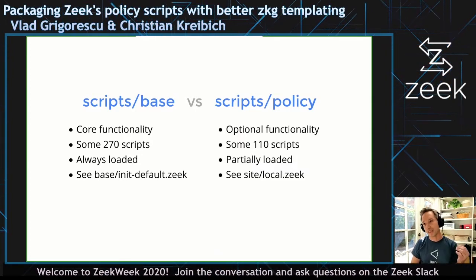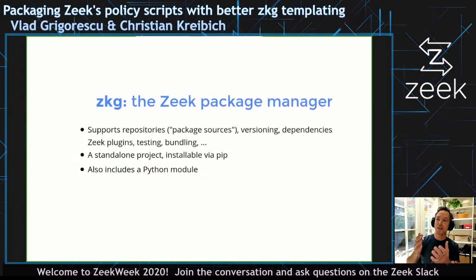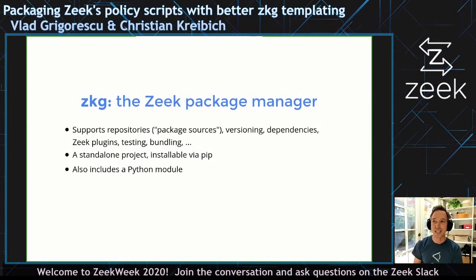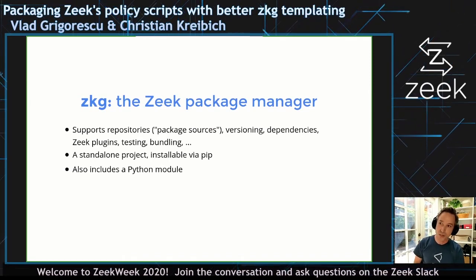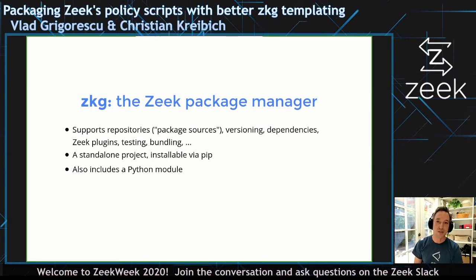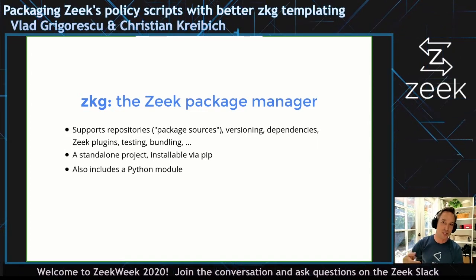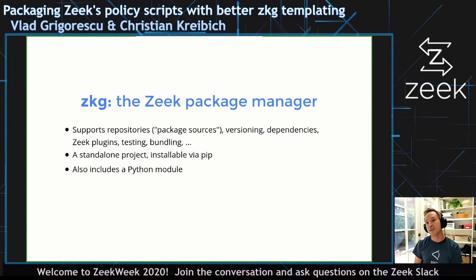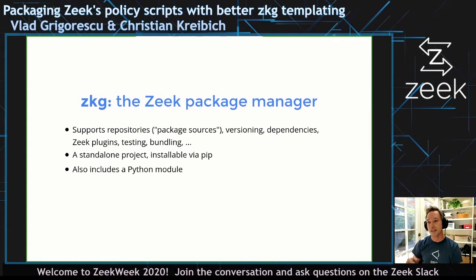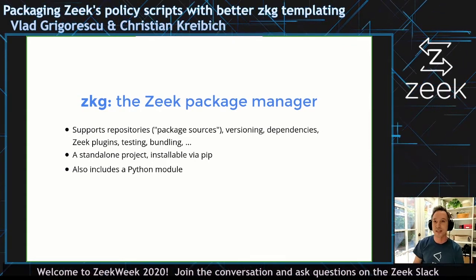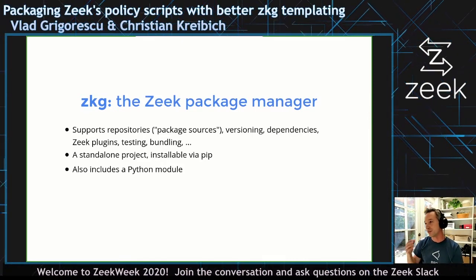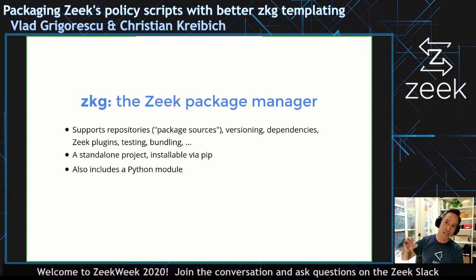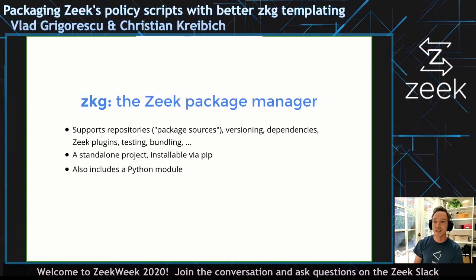If you've used Zeek in a reasonably modern fashion, you've also heard of ZKG, our package manager, which has been out there for about three years. It's pretty full-featured, much like package managers from other ecosystems like Python or Ruby. It features its own repositories — we call them package sources — there's a standard package source for the Zeek ecosystem, featuring versioning and dependencies. Zeek plugins can be parts of packages.